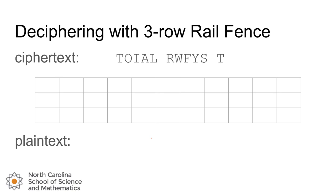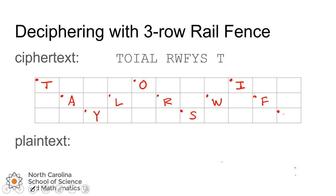We can use this algorithm one more time on the three-row rail fence. To speed things up I'll just use a little dot to denote where the letters go. So in here we would have A, T, O, I in the top row; A, L, R, W, and F in the middle row; and Y, S, T in the bottom row. And again we can follow the zigzag pattern to realize that our plain text message is 'my favorite pop star'.